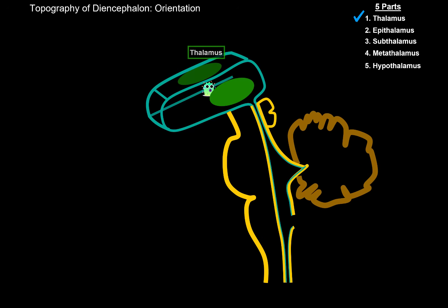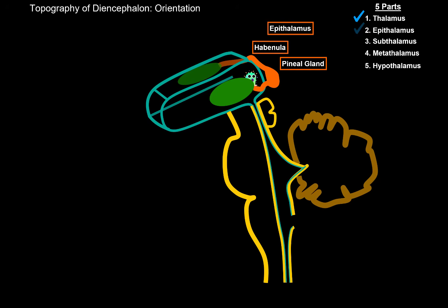Now you turn around and swim to the very back of the third ventricle, where you'll notice a small pouch hanging on the back called the pineal gland. The pineal gland is attached to the backside through the habenula. All of these together form the epithalamus.